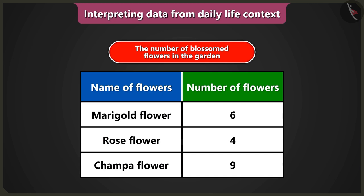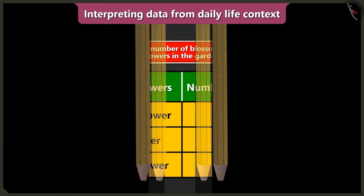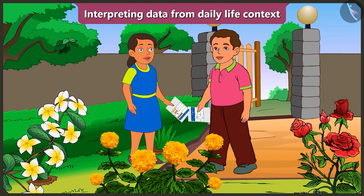Now read the second column. What is the number of flowers? The number of Merrickol flowers is six. The number of Rose flowers is four. And the number of Champa flowers is nine. The data collected about the number of blossom flowers in the garden has been shown in this table. This is very interesting.